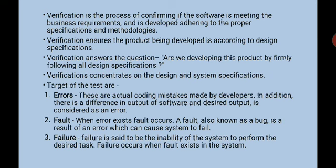What is the difference between the three terms? Errors are actual coding mistakes made by developers. There is a difference in the output of the software and the desired output — that is considered an error. Your developer made something, and there was an error in the coding part. That coding mistake is an error, and this will be seen in the difference in the output of the software.